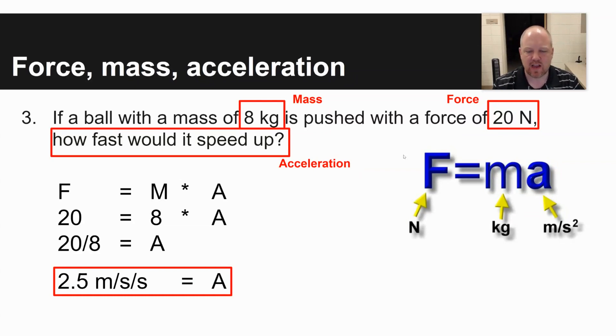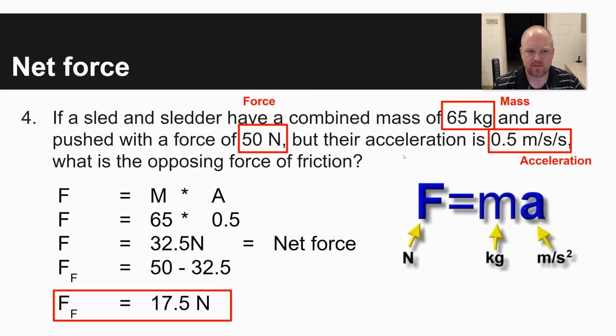The last question has to do with Newton's second law, force is equal to mass times acceleration, and it has to do with net force. A net force is an overall force acting on an object. It says if a sled and sledder have a combined mass of 65 kilograms and are pushed with a force of 50 newtons but their acceleration is only 0.5 meters per second per second, what is the opposing force of friction?